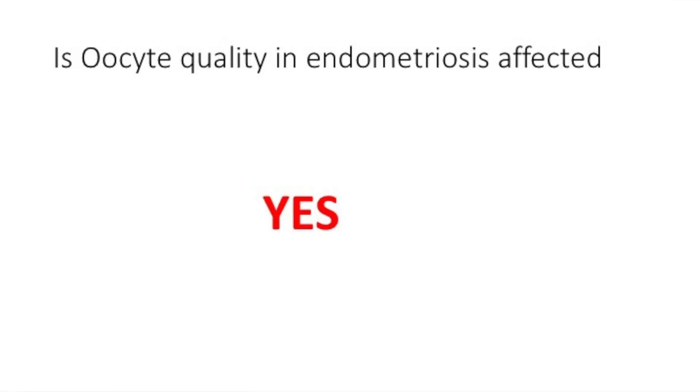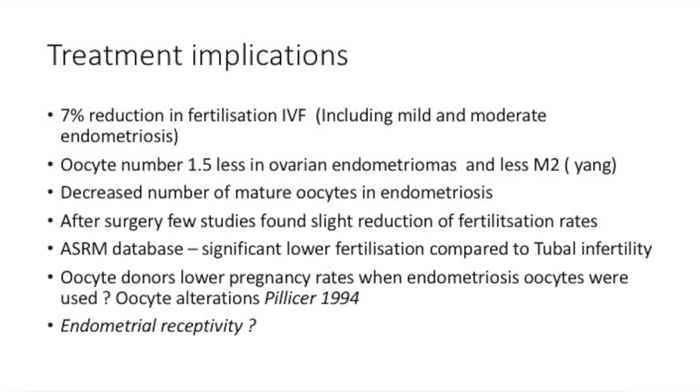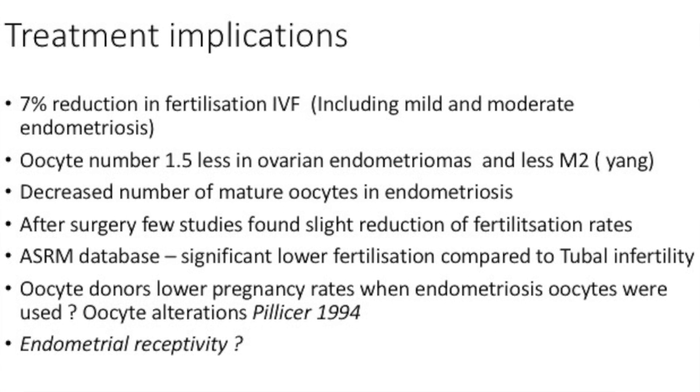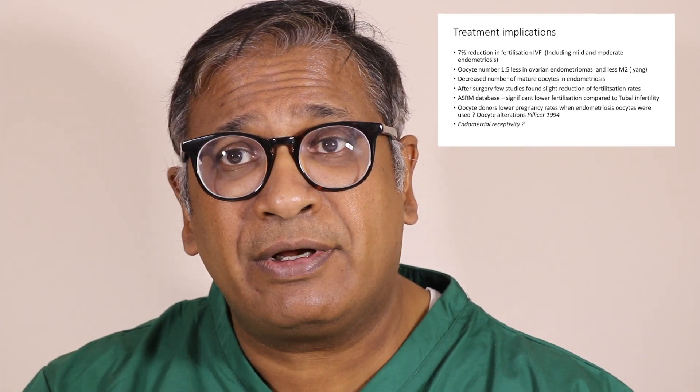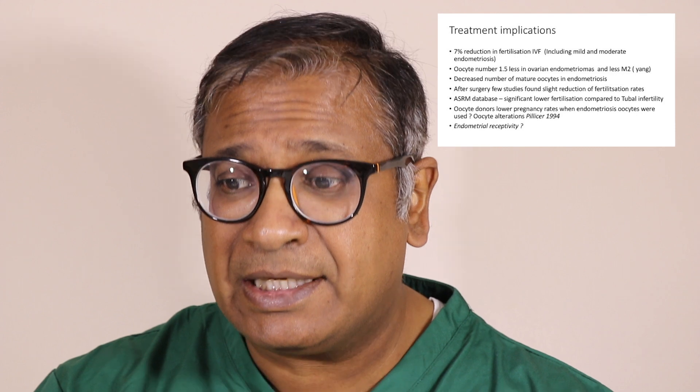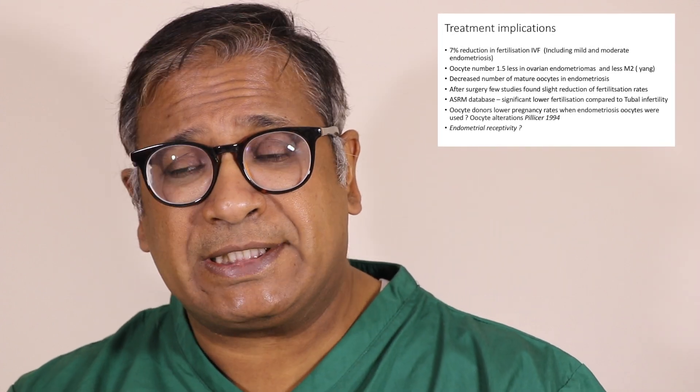So the question is: is oocyte quality in endometriosis affected? And the answer is yes, it is affected. From a treatment perspective, we see a 7% reduction in fertilization with IVF. Oocyte numbers are 1.5 times less in endometriosis patients, and you see fewer metaphase 2 and mature oocytes. After surgery, a few studies have found a decrease in fertilization rates. The SRM database shows significantly lower fertilization compared to tubal infertility. And if you put oocytes from endometriosis patients into donors, pregnancy rates are probably affected too — though this comes from a very old 1994 study. The question of whether endometrial receptivity is also affected is still being investigated.